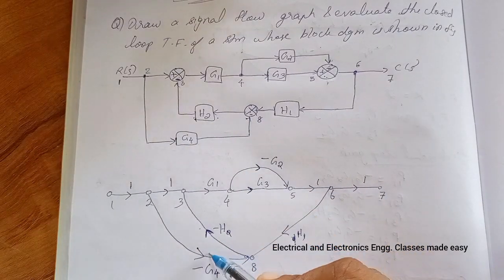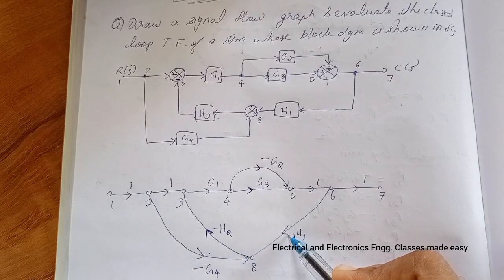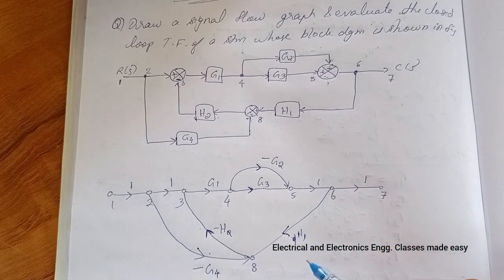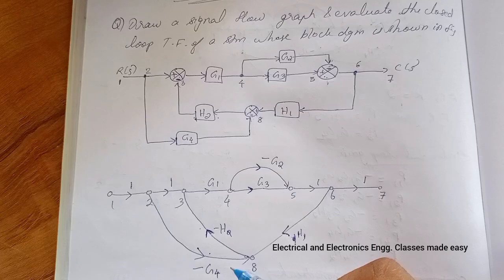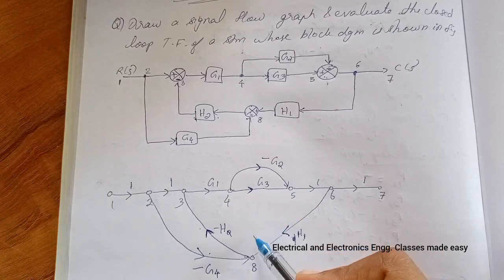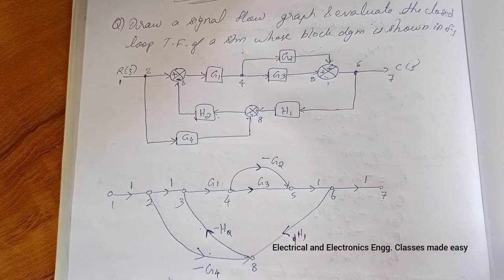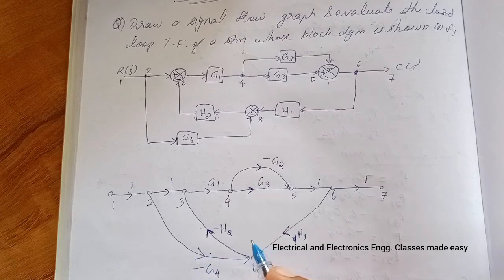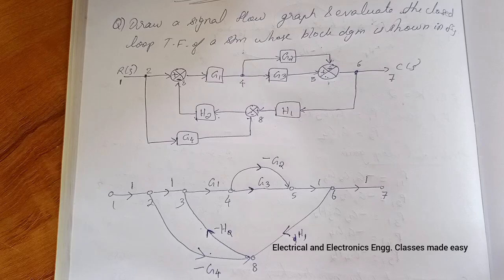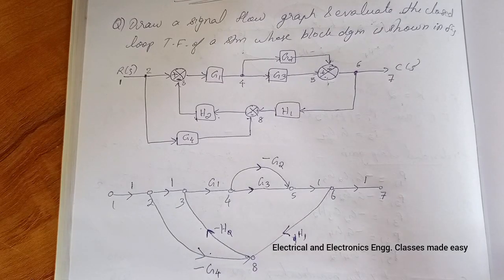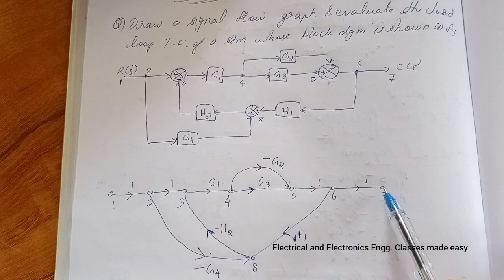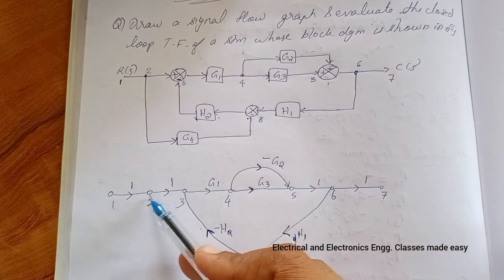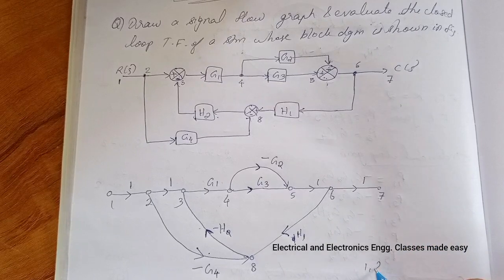The arrows are very important, so mark the arrows carefully. This completes the signal flow graph. Now we have to find the closed-loop transfer function using Mason's gain formula. For that, we first find the forward paths — we need to find the number of forward paths k. The first forward path is one, two, three, four, five.